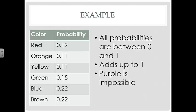Now we could say purple is impossible because there's a 0% chance that a purple would occur. None of them are unusual. They all have at least an 11% chance of occurring.